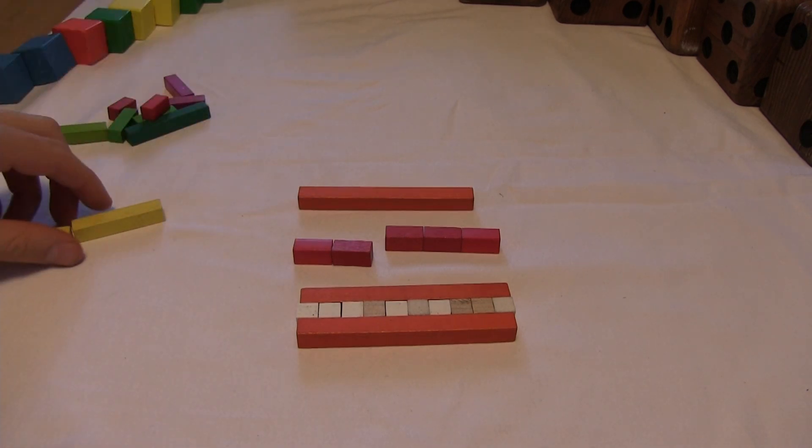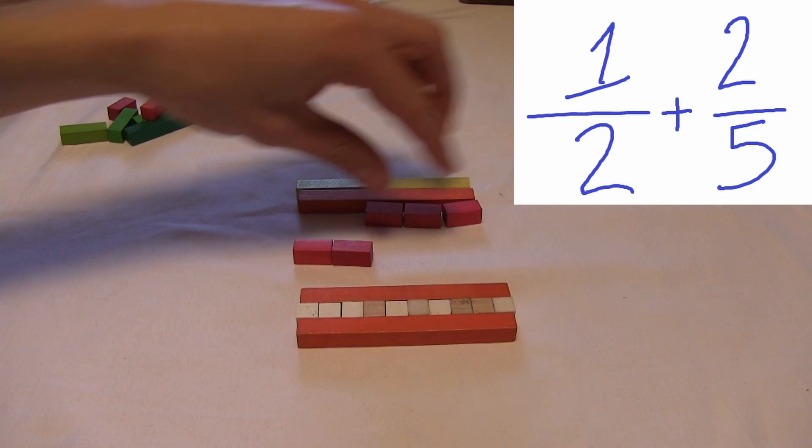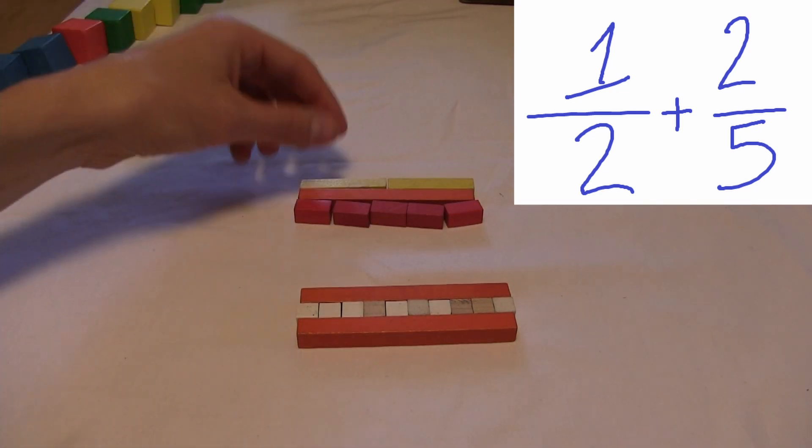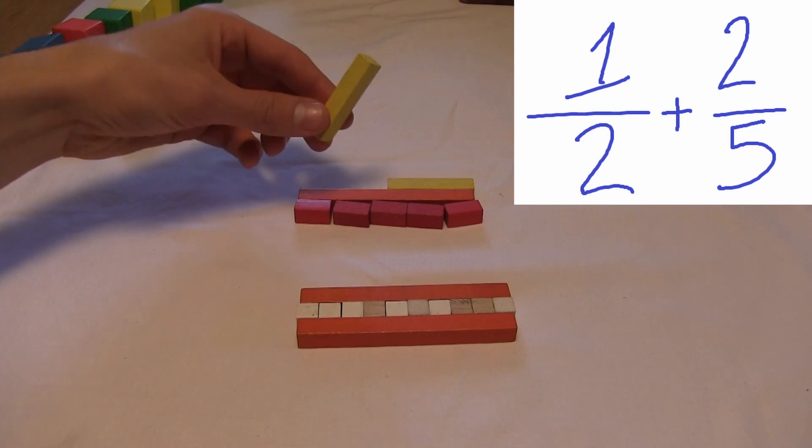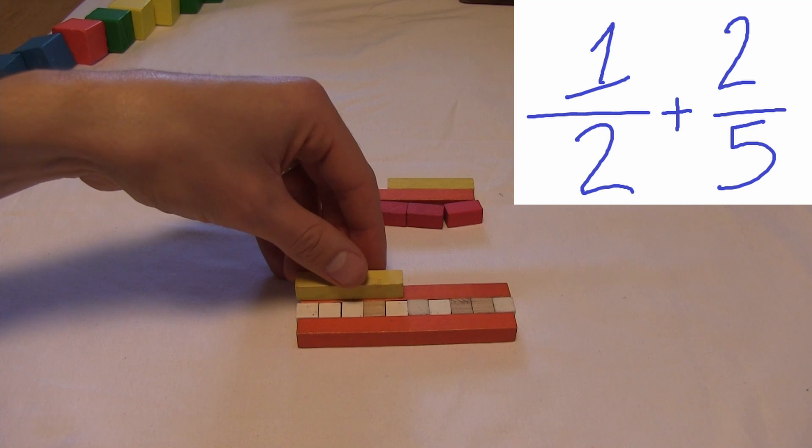All right, I wanted to find out what one-half plus two-fifths equals out to be. Well, we found out the yellow bars are halves. Two of them equals one whole. So I'm going to take one of these bars right here. And I'll set it up on my measuring stick right down here.